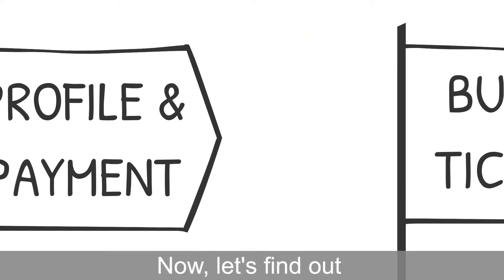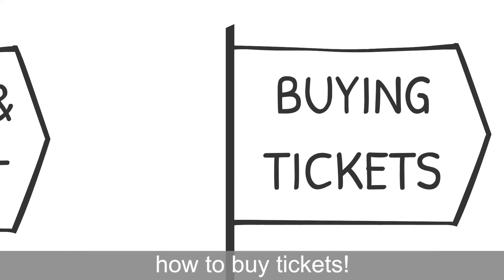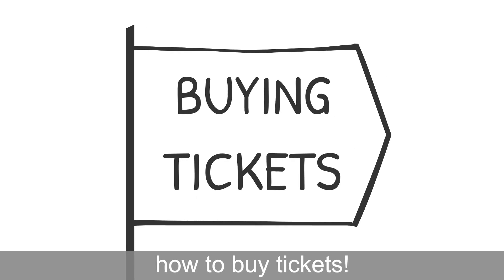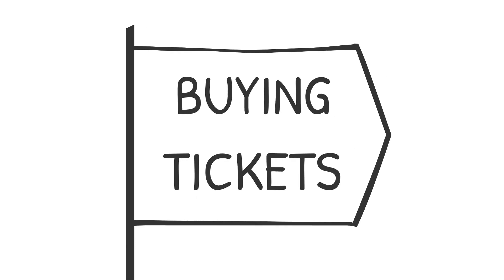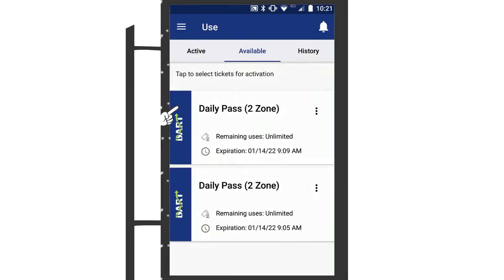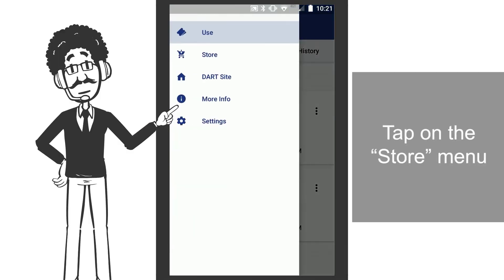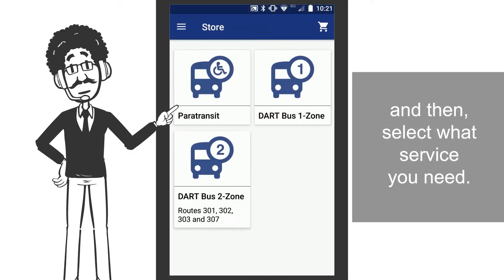Now, let's find out how to buy tickets. Tap on the Store menu, and then select what service you need.